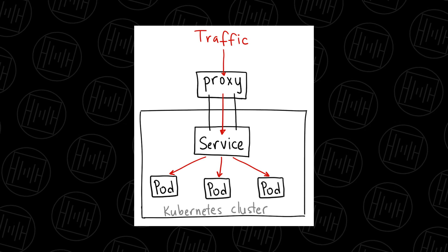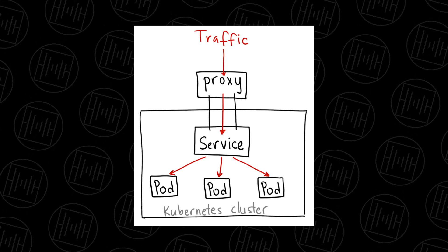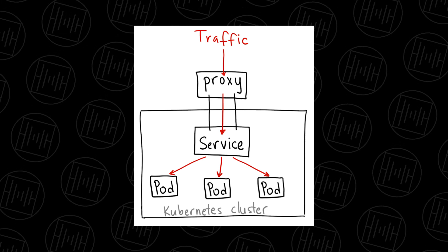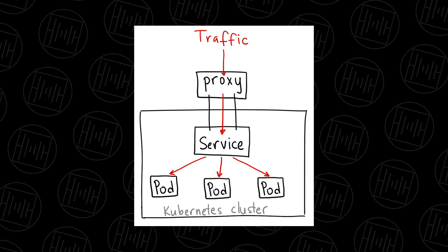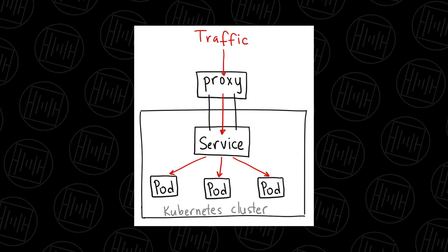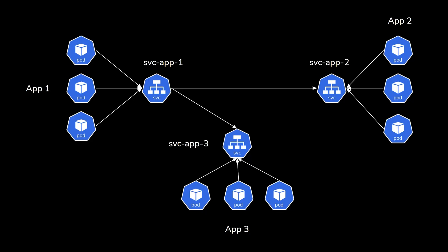ClusterIP is the internal service type in a Kubernetes cluster. All services created using the ClusterIP type are accessible only internally within the cluster — traffic coming from outside cannot access them directly via IP and port from a browser. Internal services are used to connect internal components, such as in a microservice application with a user service, department service, API gateway, and other components.